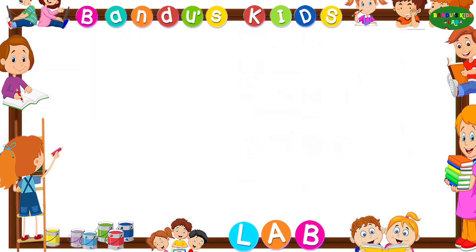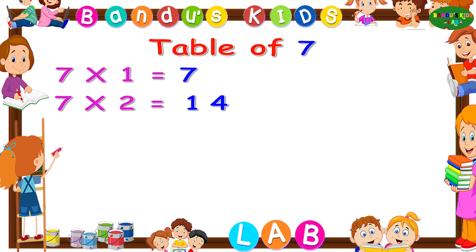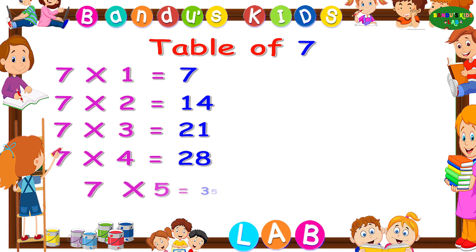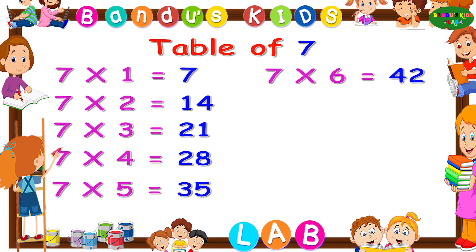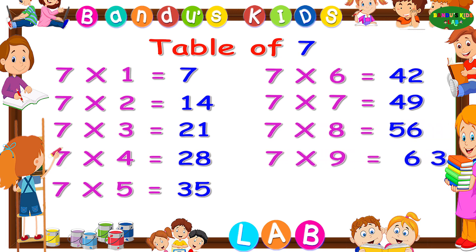Now let's revise the table of 7 one more time. 7 1's are 7. 7 2's are 14. 7 3's are 21. 7 4's are 28. 7 5's are 35. 7 6's are 42. 7 7's are 49. 7 8's are 56. 7 9's are 63. 7 10's are 70.